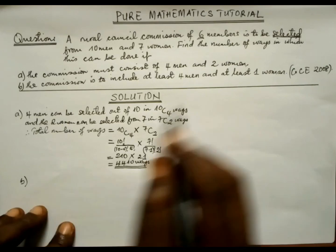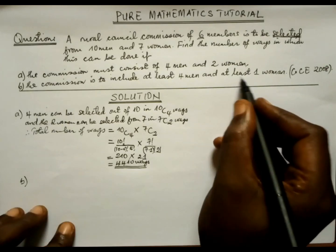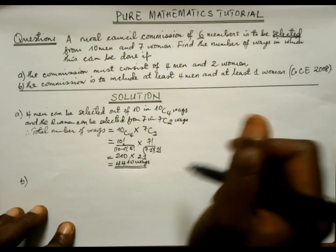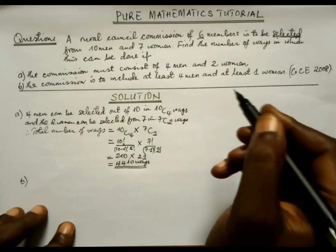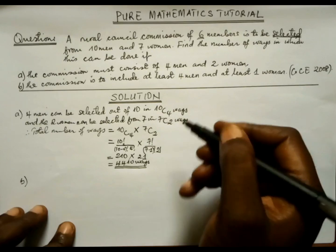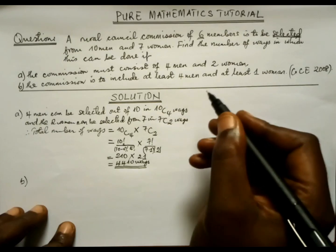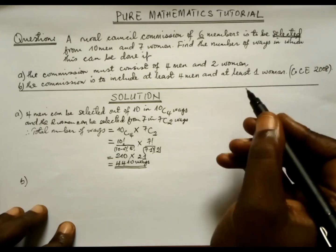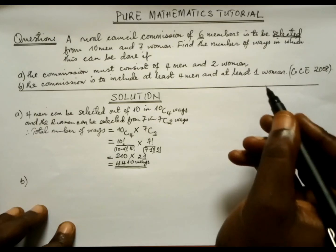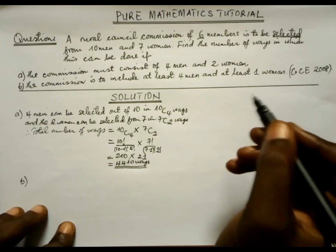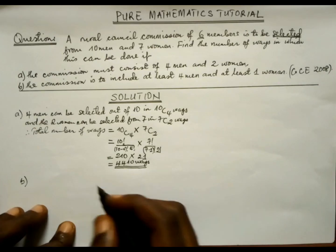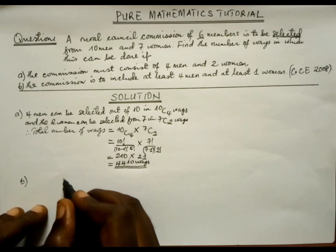A diagram is needed in order to track all the options to be considered. 'At least' means from that number going up; if it were 'at most,' it would be from that number going down. So at least four men means the minimum is four, and could be five and so on. The least number of women is one, going up to two and beyond. A table is needed so we don't miss any options.